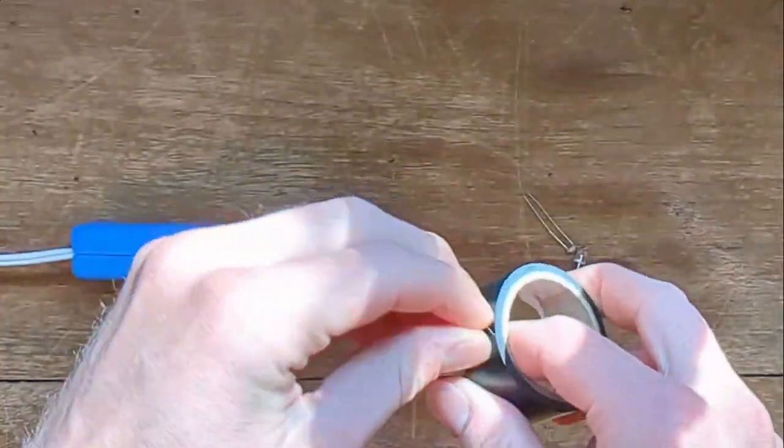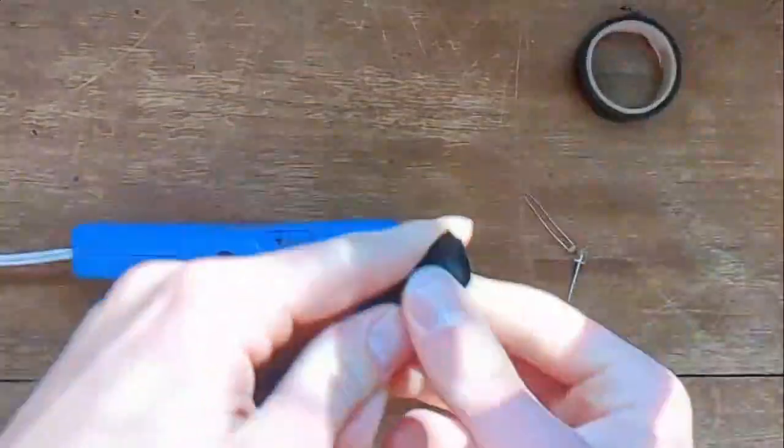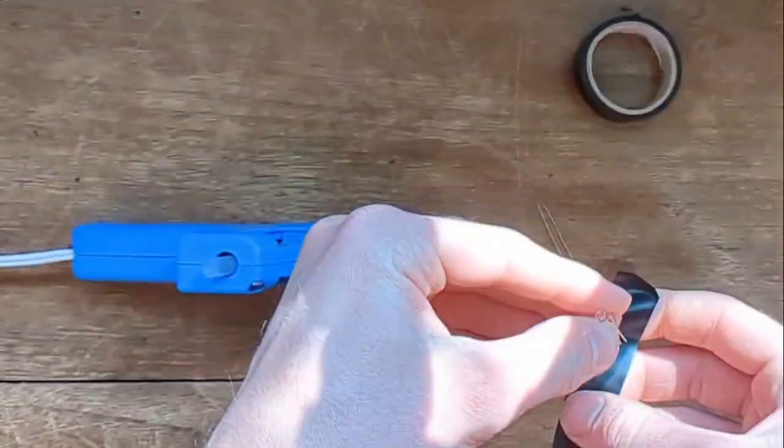Now the circuit does contain a Vactral, so I figured now would be a good time to explain how to make a Vactral, or how I make them.